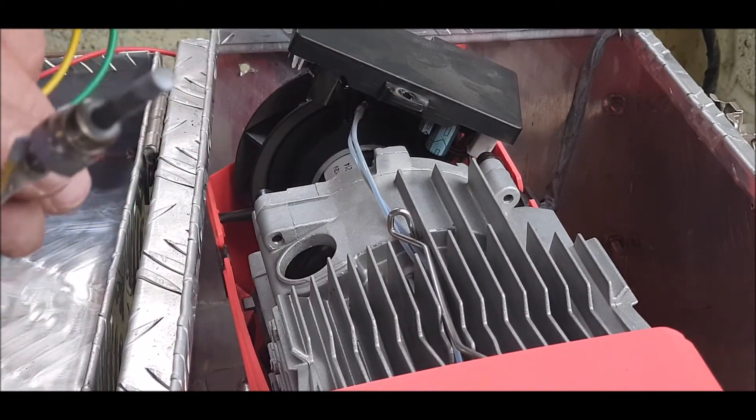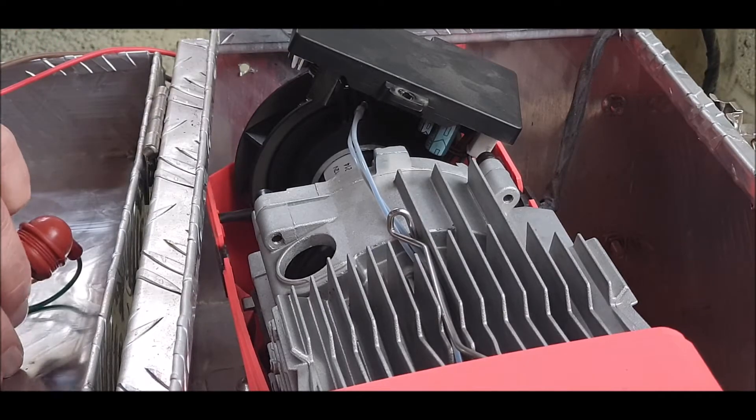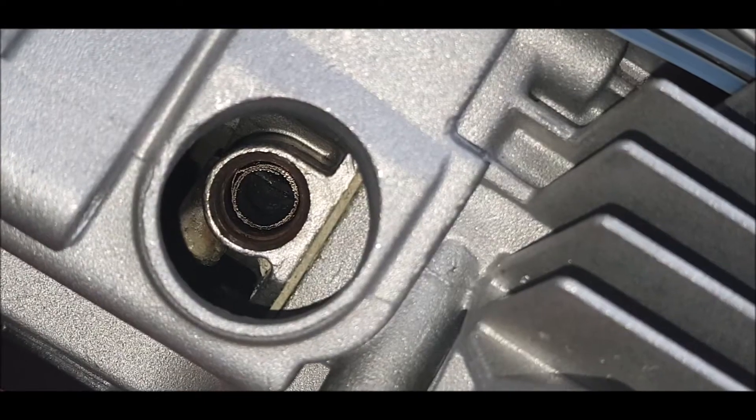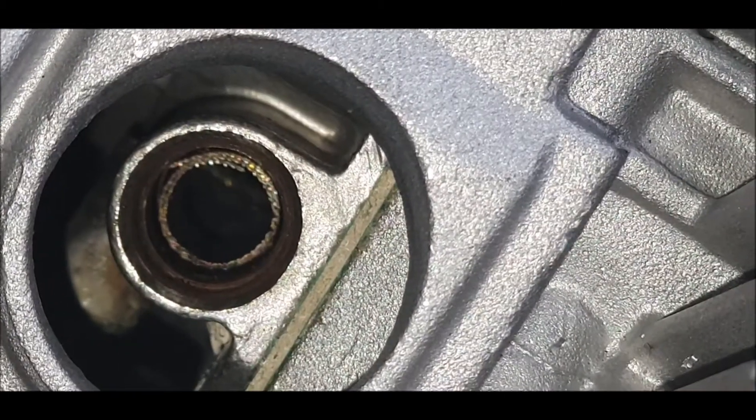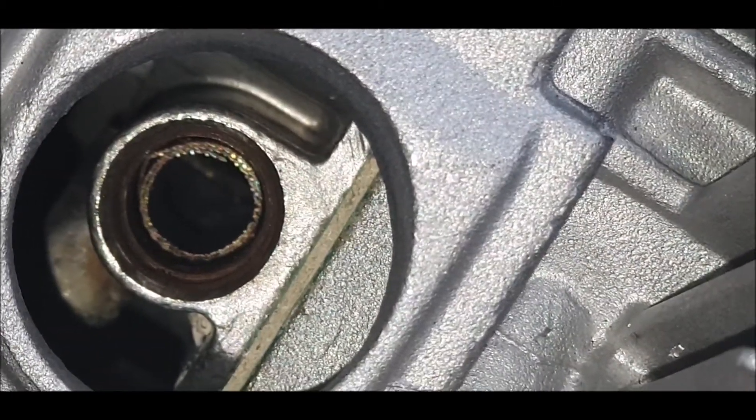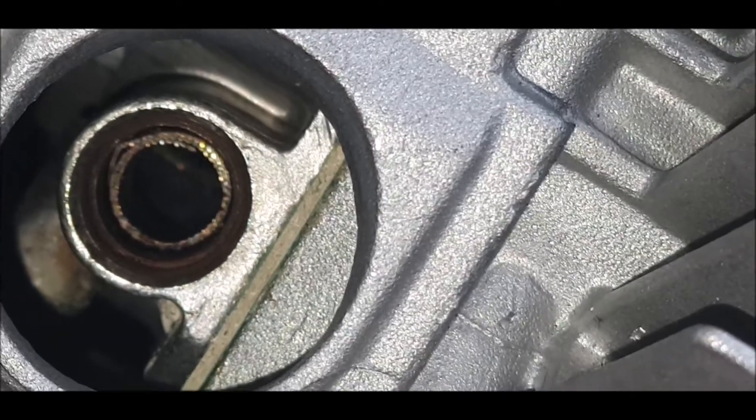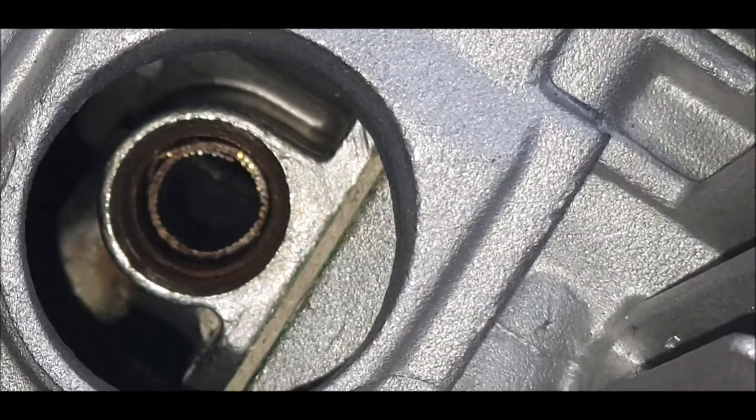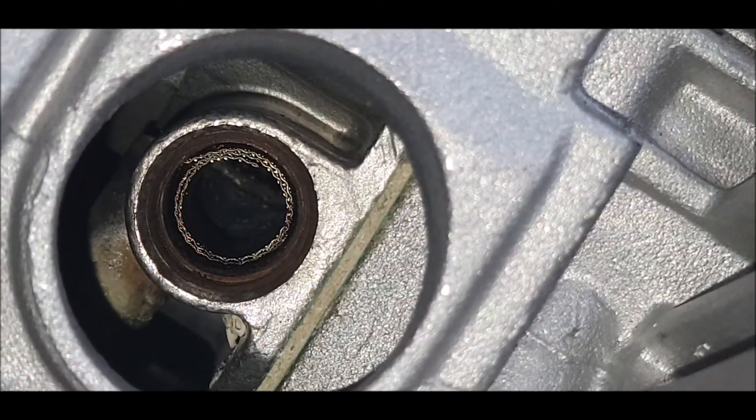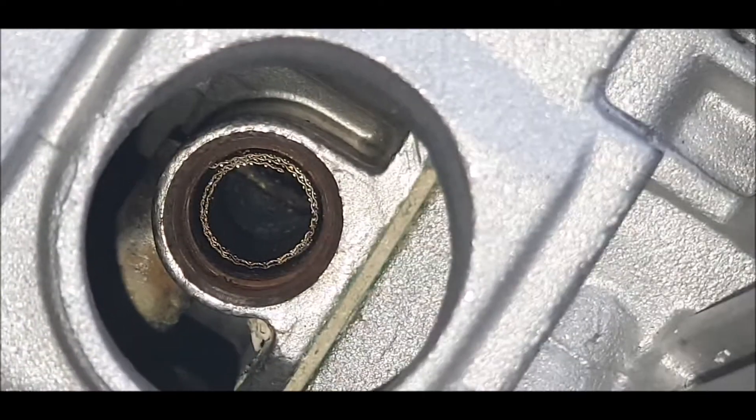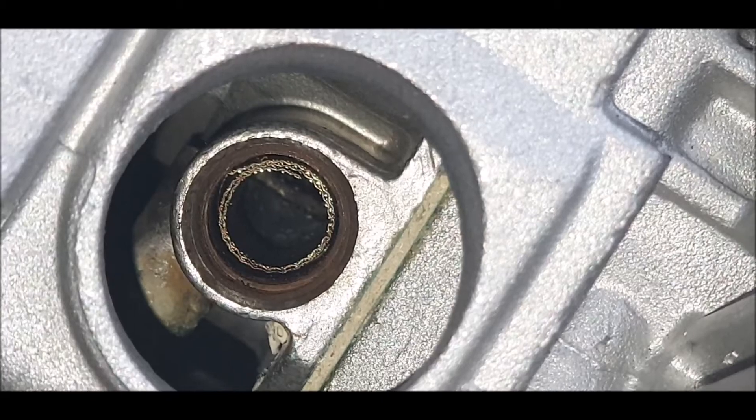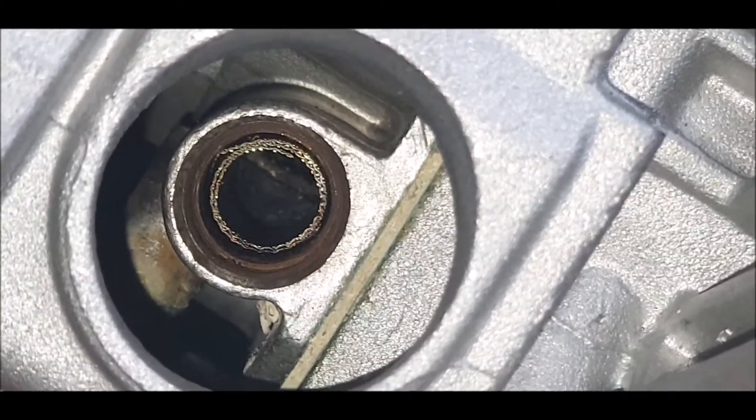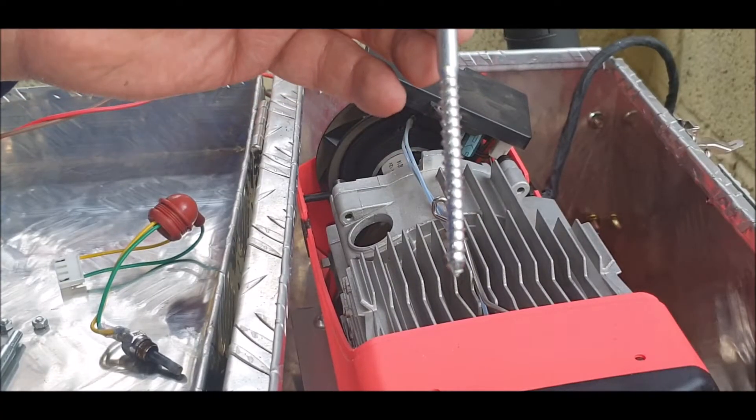And there we go. So now inside there is an atomizer screen I want to get out. They reckon that sometimes that's one of the problems because it gets all dunged up. If we can get any focus, can you see that? So I've got to get that out. To do that we use an 8 mil bolt. I'll show you that now. There we go.